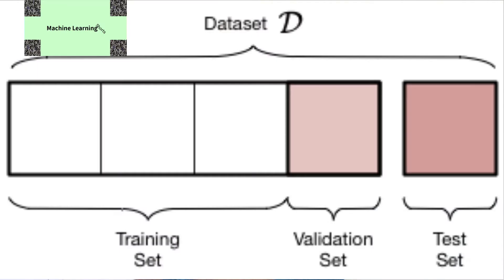Basically, there are three types of datasets: training set, validation set, and test set. A training set is used to learn the model to do a classification task. A test set should be kept separate because on this dataset you will test your models, so we keep the test set aside.